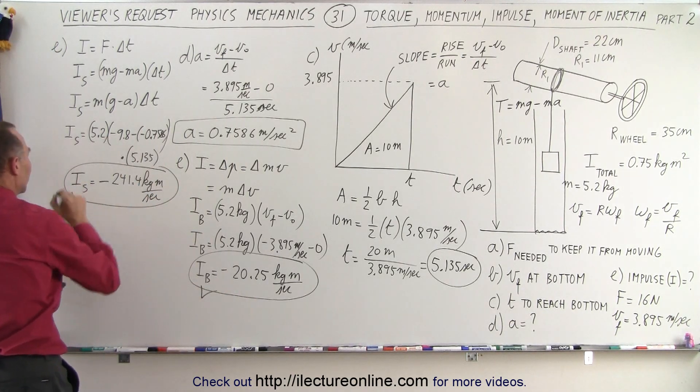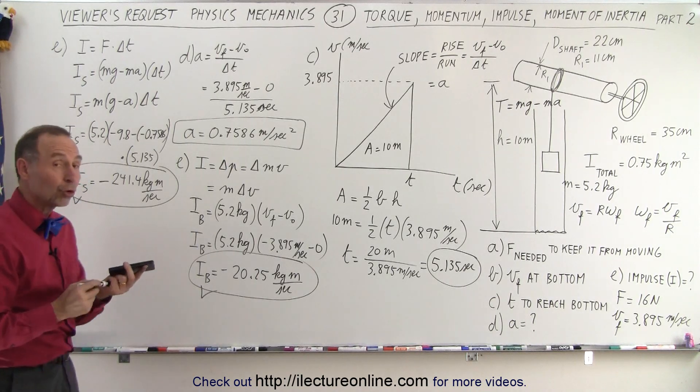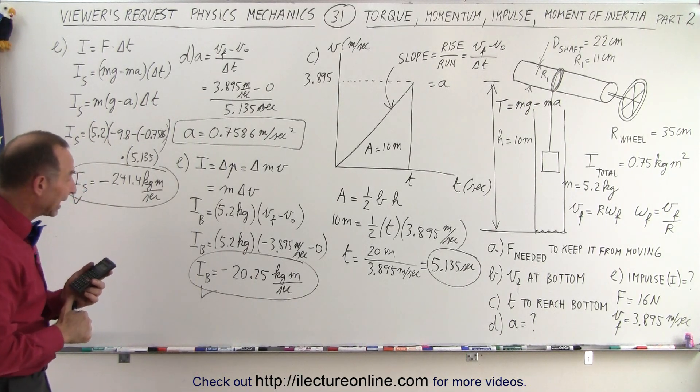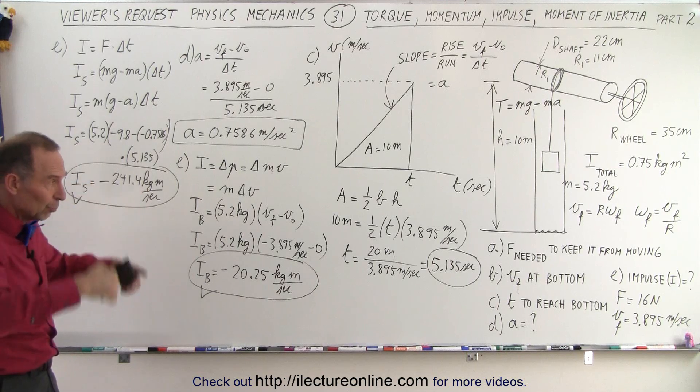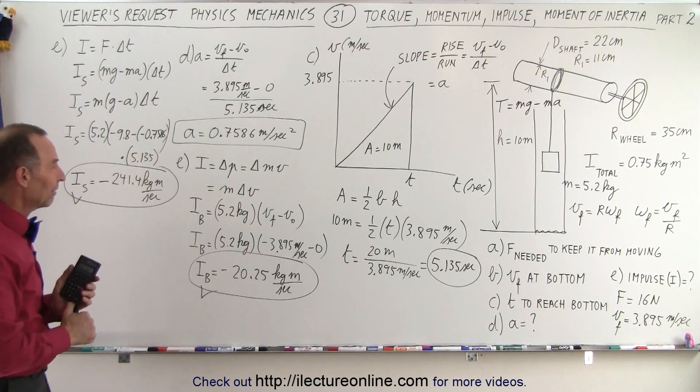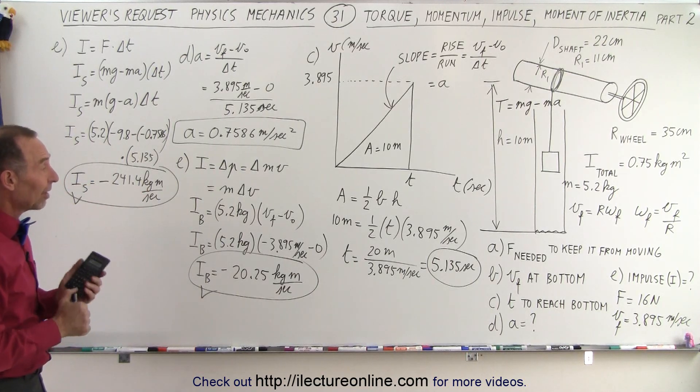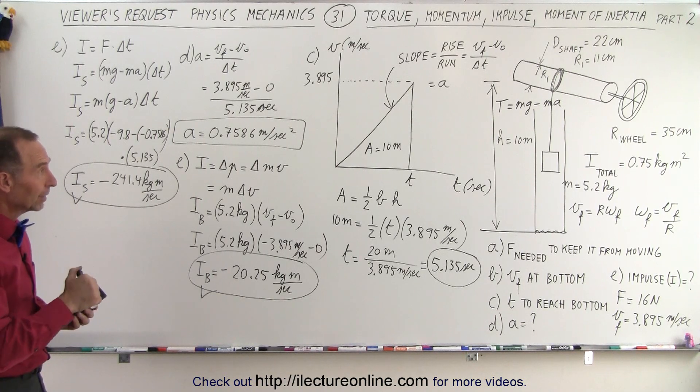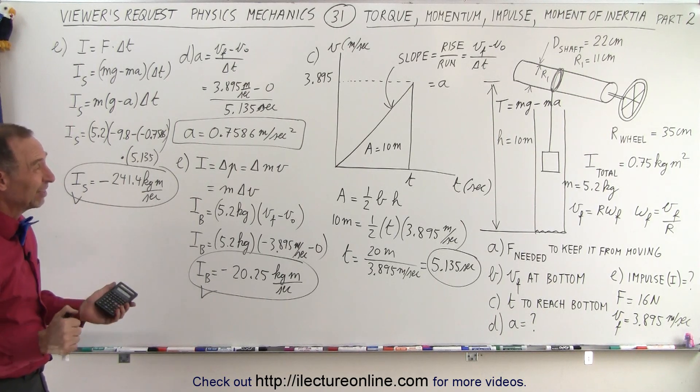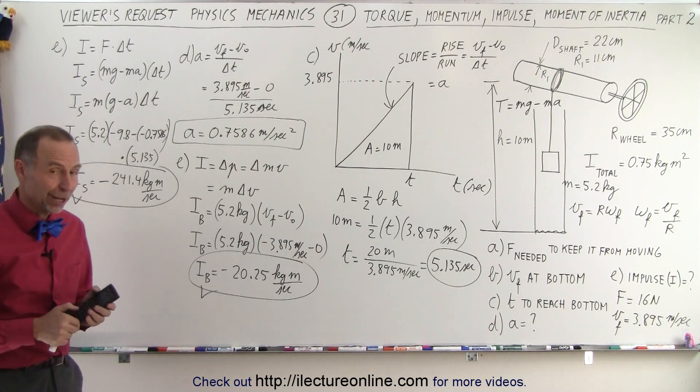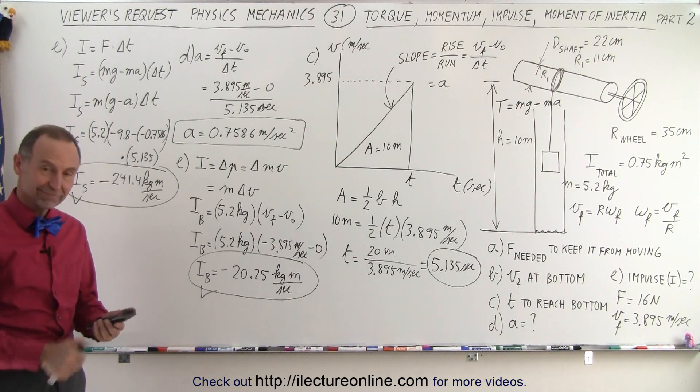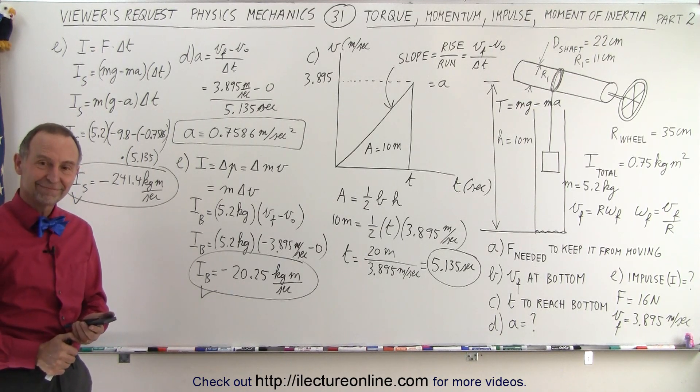And so there is the second party impulse. So the impulse on the bucket and the impulse on the shaft. That will be the total impulse for both of them together. Negative because motion is in negative direction. So we should have a negative impulse. But that's how you calculate the impulse on the bucket and the impulse on the shaft. It's an interesting problem. And there's how you do that.